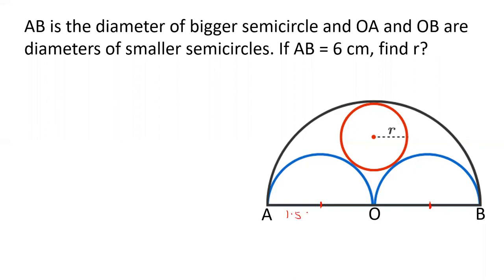The radius of each smaller semicircle is 1.5 centimeters. So taking the center of the inscribed circle, its distance relates to 1.5 centimeters on each side.